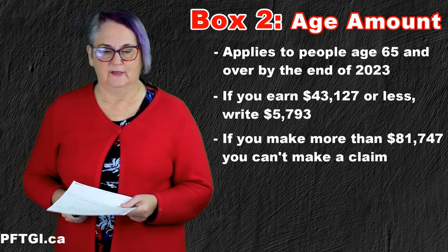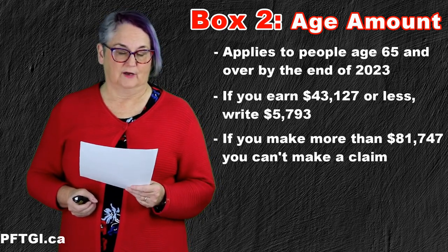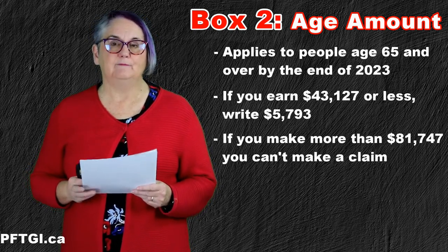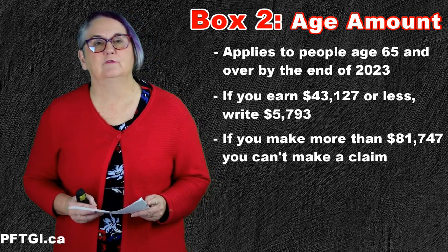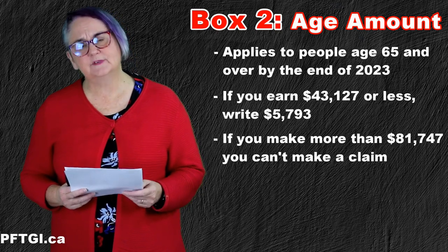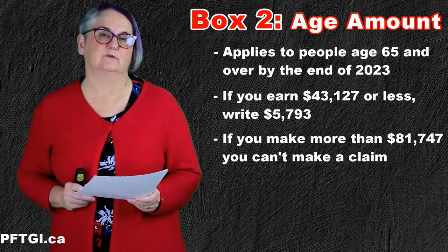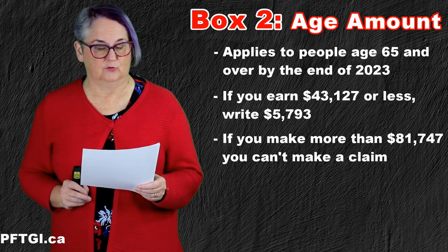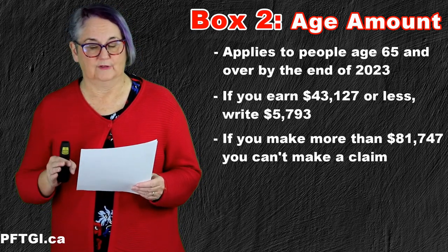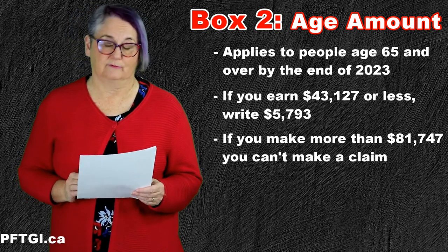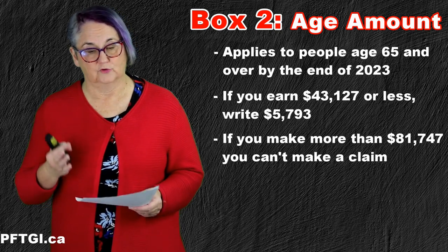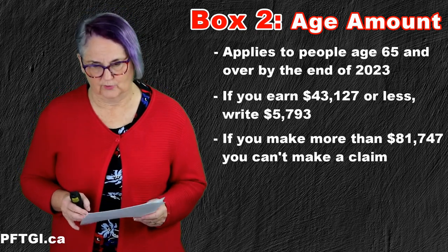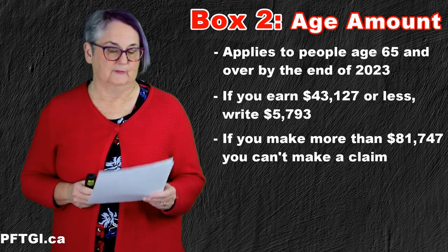Box 2 is about the age limit. If you're not over 65, you don't need to worry about this box. But if you are over 65, there's some proration involved, because any age amount in Canada is really only available to lower income earners. If your net income is going to be $43,127 or less in 2023, then the amount you can claim for an age exemption is $5,793. If your income is between $43,127 and $81,747, you can claim a partial amount, and there's a worksheet provided to prorate that. If your income is over $81,747, there is no claim for this age amount, so you can put a zero in that box.